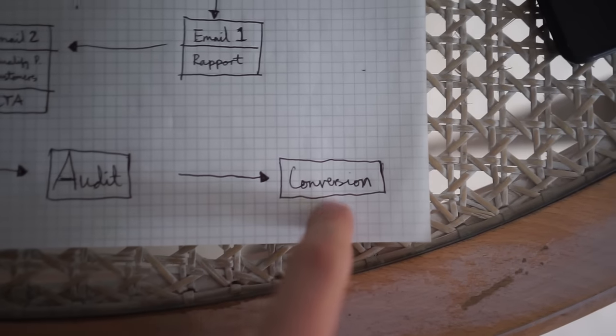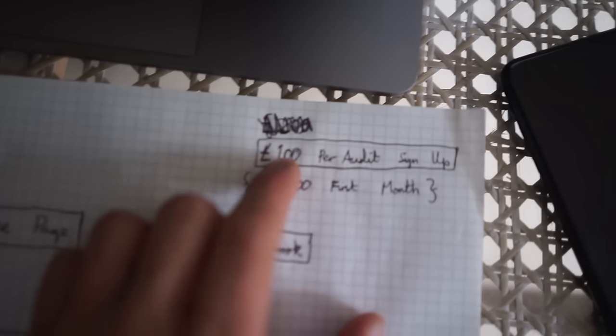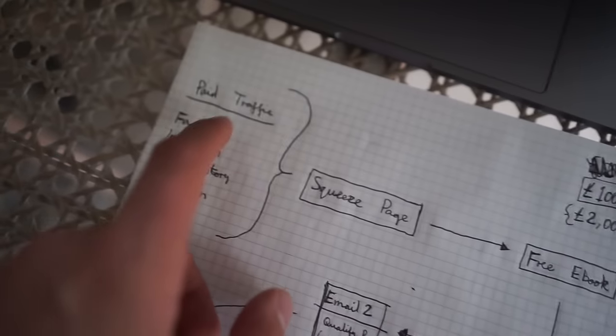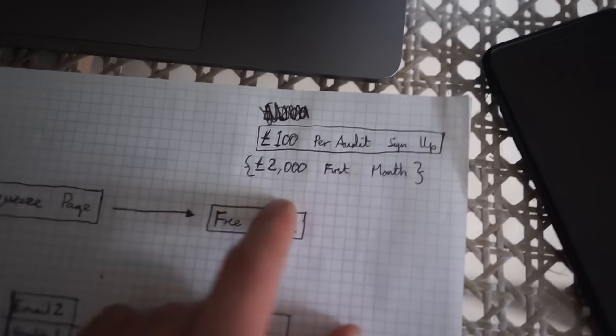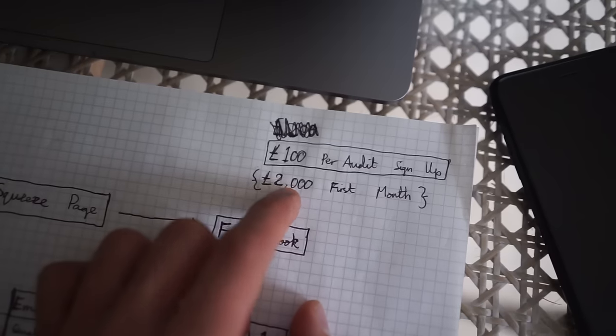Once I've audited and sent their audit, the only goal is conversions. I'm willing to pay up to £100 per audit signup — covering the paid traffic, squeeze page, free ebook, emails, and getting them to opt into the audit. The reason is I know a client is worth on average £2,000 to me in the first month alone. So even if only one out of ten audits converts, I've spent £1,000 on acquisition but I'm making £2,000 profit in their first month — and that's just the front end, before all the subsequent months and upselling.